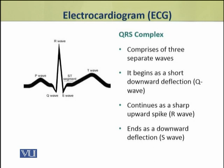The QRS complex comprises three separate waves linked together and treated as a complex. It begins as a short downward deflection called the Q wave, then continues as a short upward spike called the R wave, and ends as a downward deflection called the S wave.